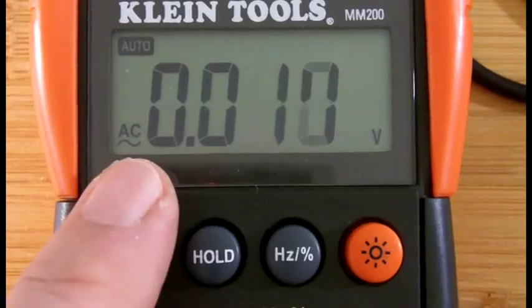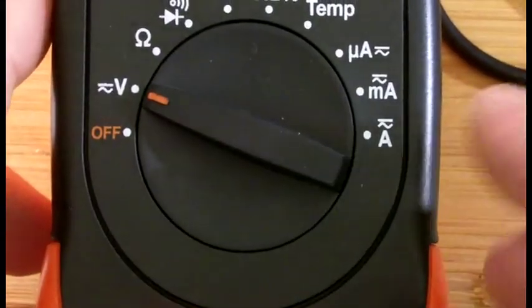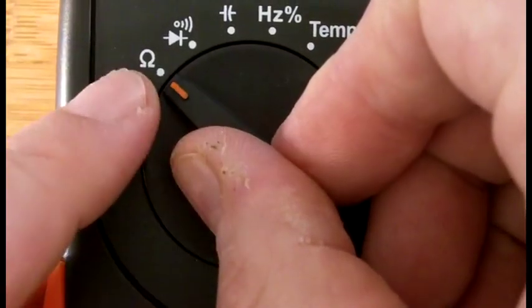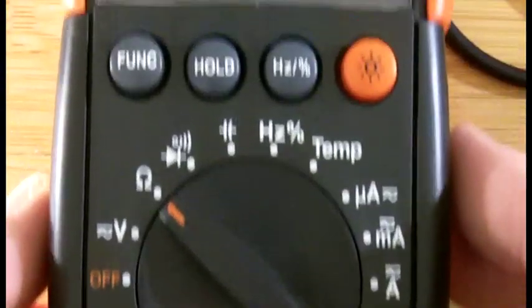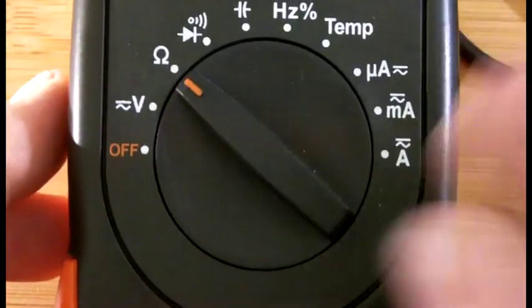Mine switches by pushing a button from direct to alternating. Alternating is the wave, direct current is a straight line over a dotted line. You'll need the omega for ohms or resistance. That one's showing it's set to that by OL for open link.